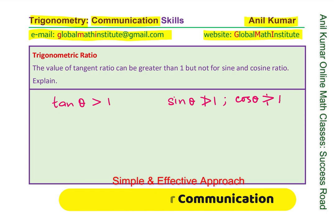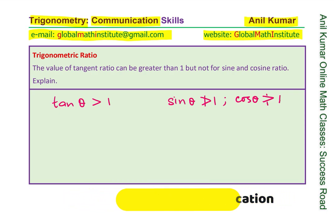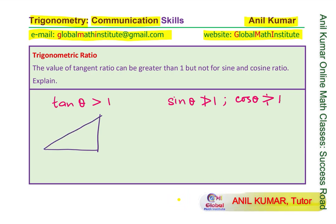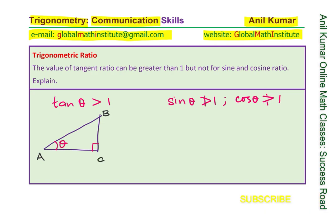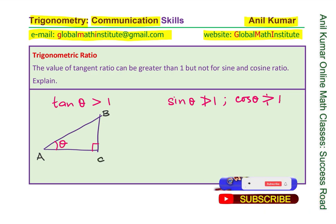Let us consider the two cases. For that, let me sketch a right angle triangle. Trigonometric ratios are normally defined in a right angle triangle. Let us say this is the right angle triangle with 90 degrees shown there, and that is the angle theta. Let me label the sides as A, B, C — where C is the hypotenuse, B is the base, and A is the opposite side.